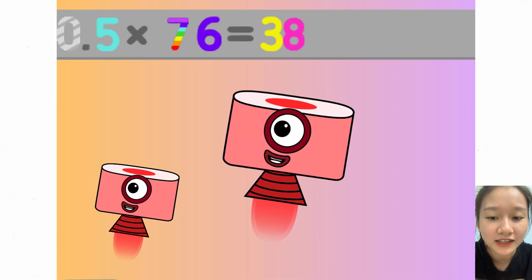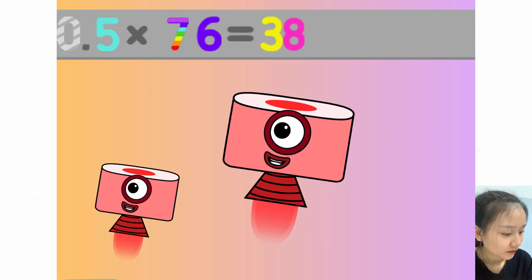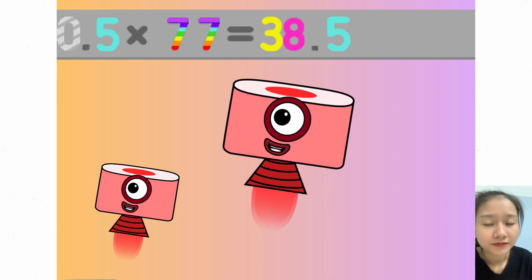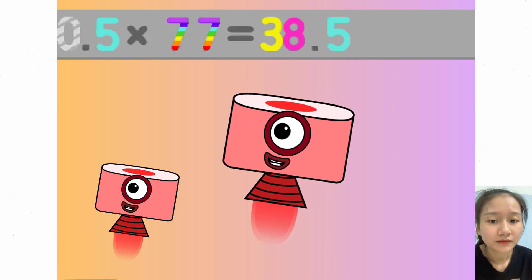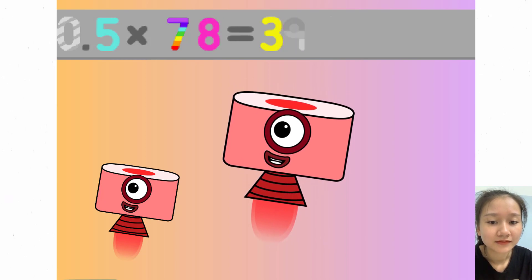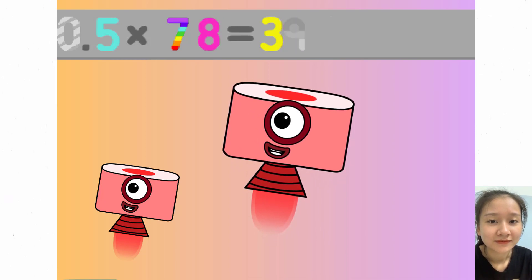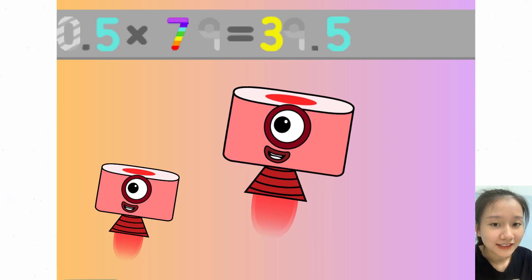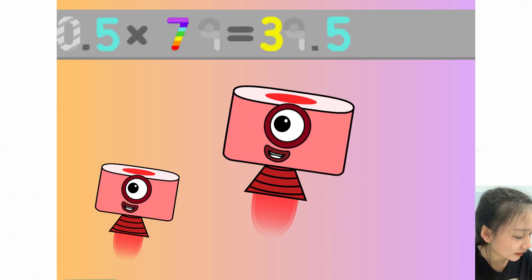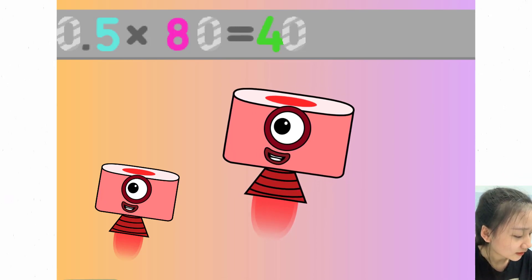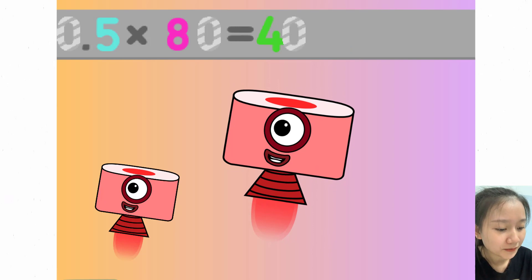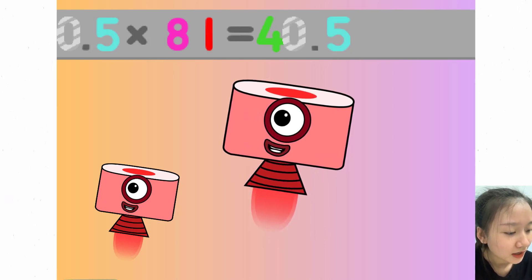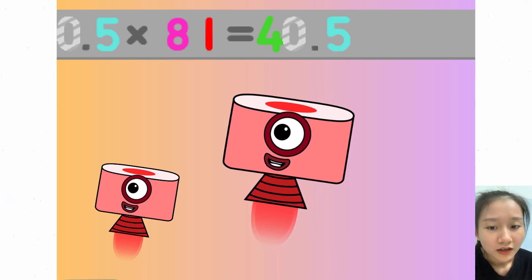0.5 times 76 equals 38. 0.5 times 77 equals 38.5. 0.5 times 78 equals 39. 0.5 times 79 equals 39.5. 0.5 times 80 equals 40. 0.5 times 81 equals 40.5.